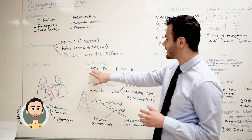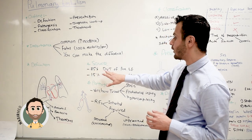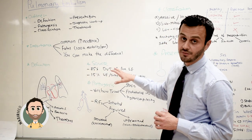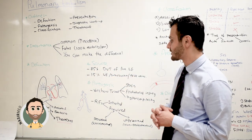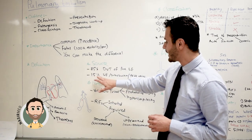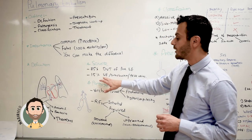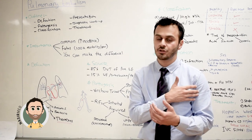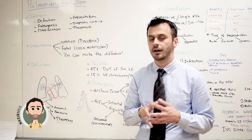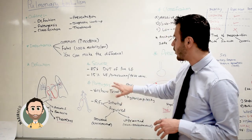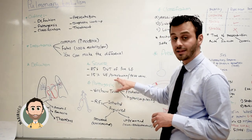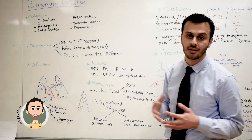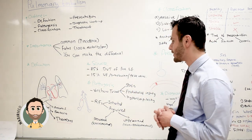Now, this is 85% of the cases — from a DVT of the proximal lower extremity. The other 15% comes from either the upper extremity, such as in patients with IV catheters, or from the subclavian vein, or from pelvic veins — which is commonly seen in pregnant patients.